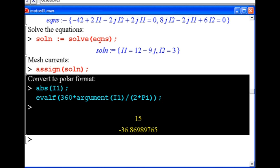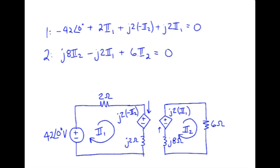So let's go back and record that our solution from Maple was 3 at 0 degrees amps and 15 at minus 37 degrees amps.